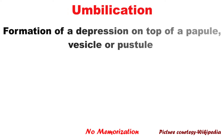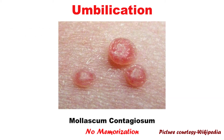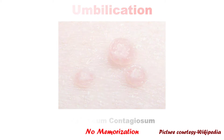Next one is umbilication. It is a formation of a depression at the top of a papule, vesicle, or pustule. For example, molluscum contagiosum. Here you can see a dimple in the center. Although it is not so clear in this picture, but there is a dimple.